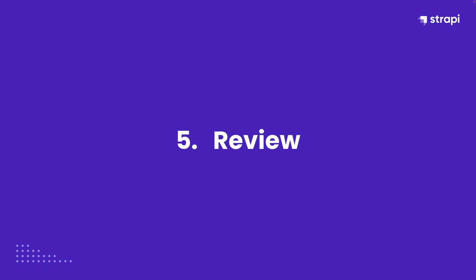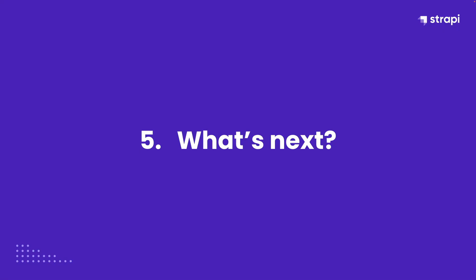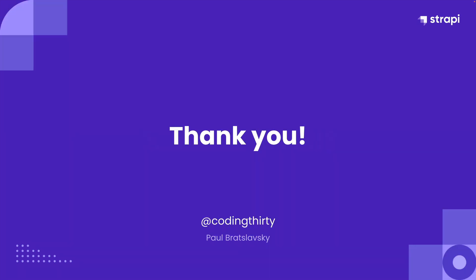Another long video! Let's quickly review what we accomplished today. We created our routes, controllers, and services, and we learned about entity service — the recommended way to communicate with your database in Strapi. What's next? To finally finish our application, we need to combine our admin portion, which is our UI, and our server portion, which is our backend, to communicate together. That's exactly what we're going to do in the final video of this series. Thank you so much for your time — if you have any feedback or suggestions, let us know in the comments. If you haven't subscribed or joined us on Discord, go ahead and do that now. You can also connect with me on Twitter at coding30. Have a great rest of your day, and I'll see you in the next video.